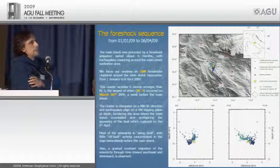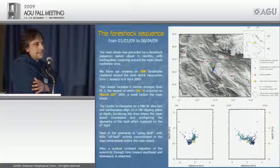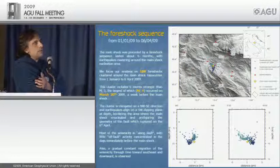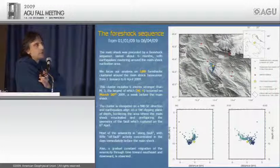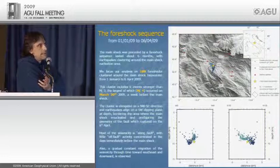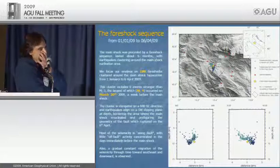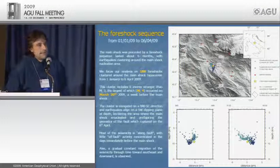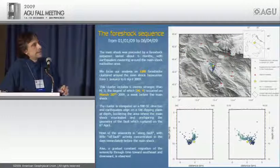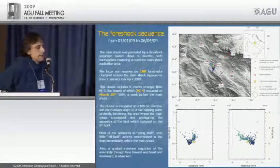The dense seismic network configuration in the epicenter area gave us, for the first time, the opportunity to describe the preparatory phase in detail. Starting from January, the national seismic network recorded about 300 events in the epicenter area, most densely clustered around the main shock epicenter. This cluster includes six or seven events with magnitude greater than 3, and one magnitude 4 foreshock — very important in our reconstruction — which occurred on March 13.